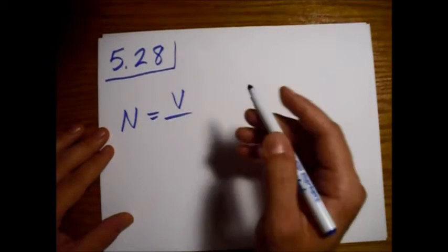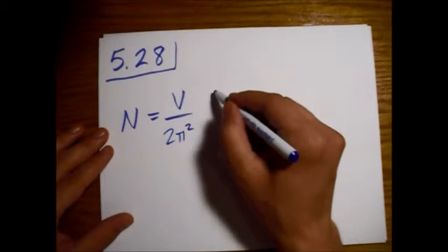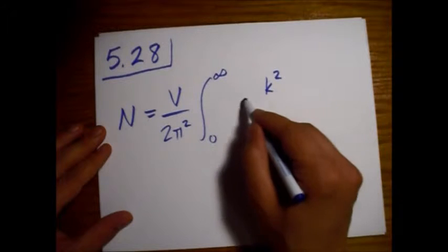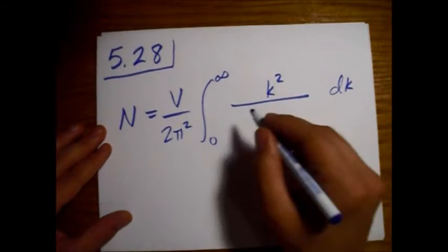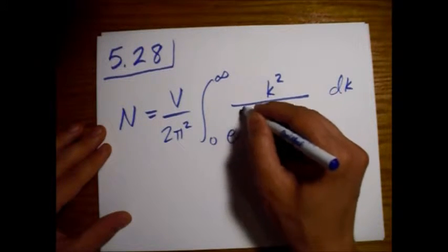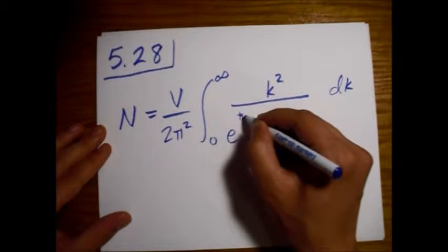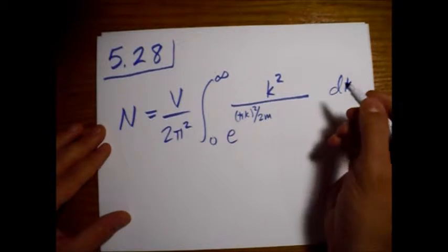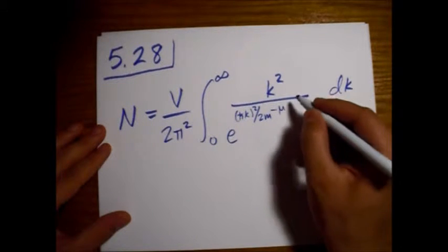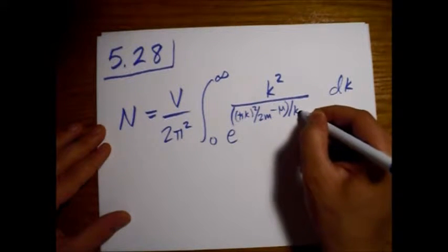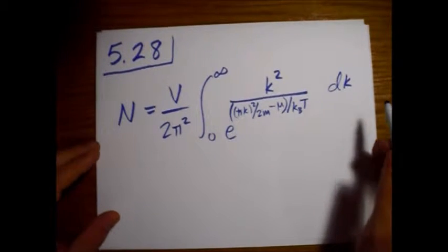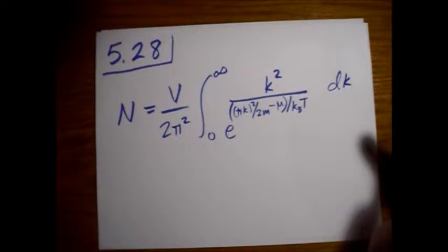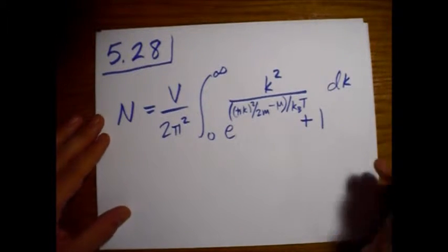So n is equal to volume divided by 2 pi squared integral from zero to infinity over k. And then we have the energy, kinetic energy, so momentum h bar k, so this is squared over 2m, so just kinetic energy, minus mu, our chemical potential, and this quantity is divided by kbt, kb the Boltzmann constant not to be confused with this wave number k. And then we're doing this for fermions, so we'll have a plus one down here.